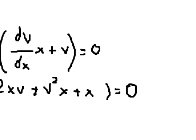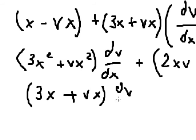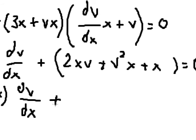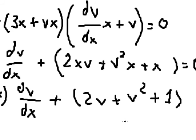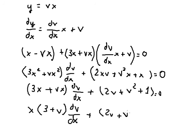Because we have x in both terms, we divide everything by x and we get 3x plus vx times dv over dx. This simplifies to 2v plus v squared plus 1 equals zero. After simplifying, we do factorization with x, so we get x multiplied by 3 plus v times dv over dx, and 2v plus v squared plus 1 equals zero.